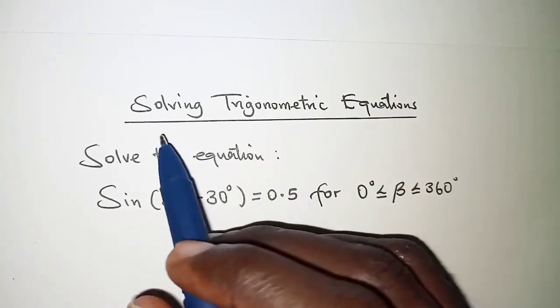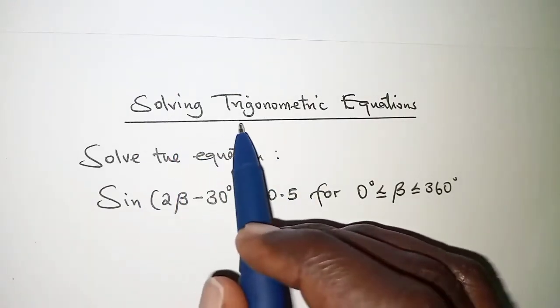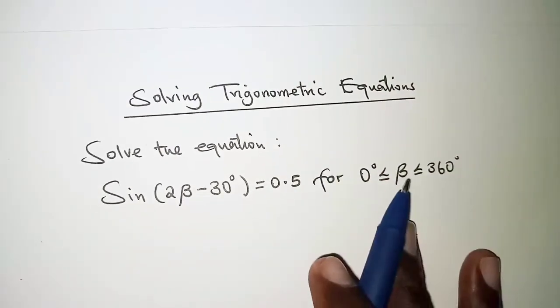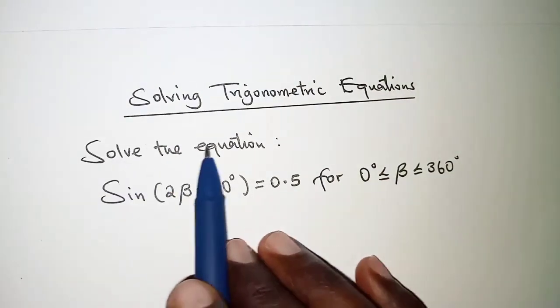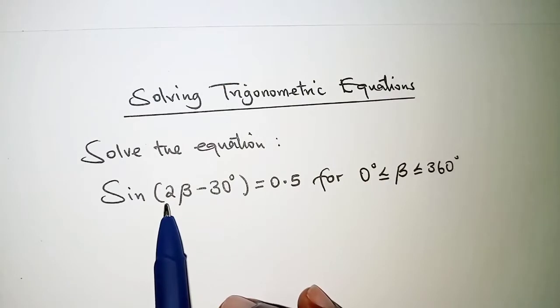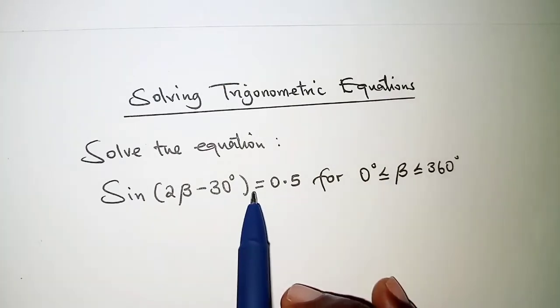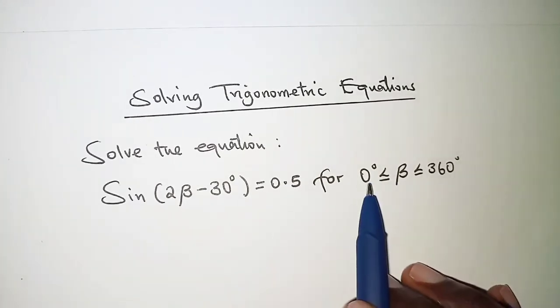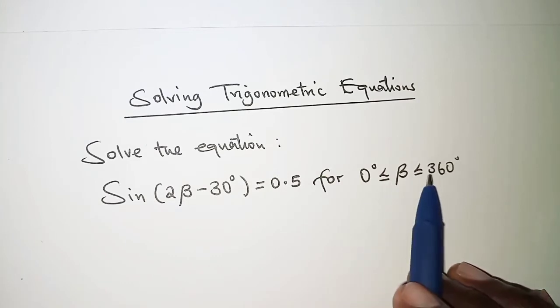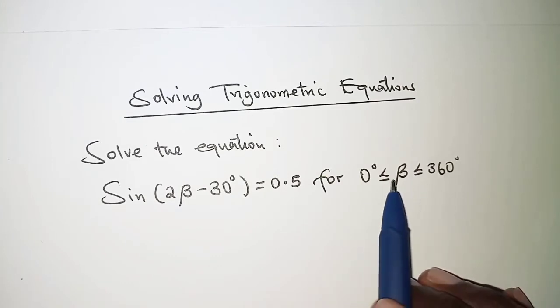Welcome, in today's presentation we are going to solve a trigonometric equation. The question reads: solve the equation sine of twice beta minus 30 is equal to 0.5 for the range 0 up to 360 for the values of beta.